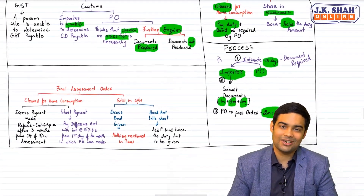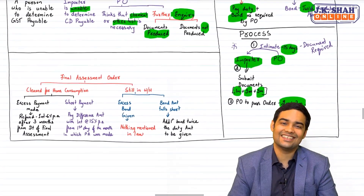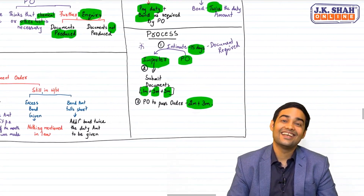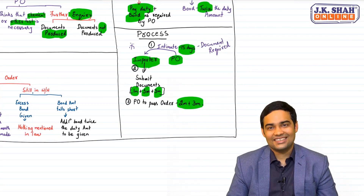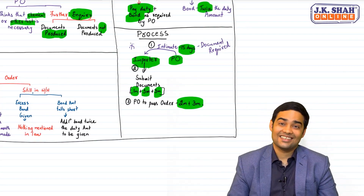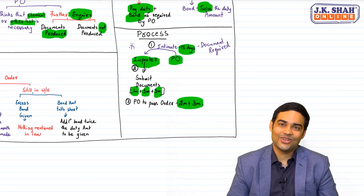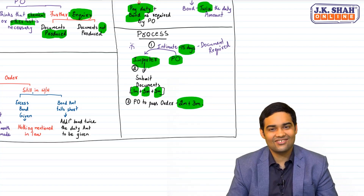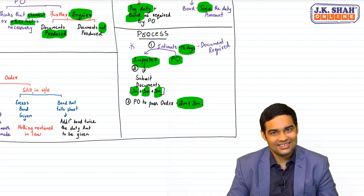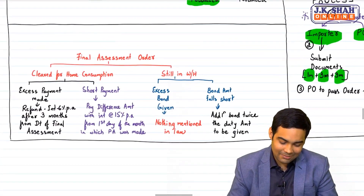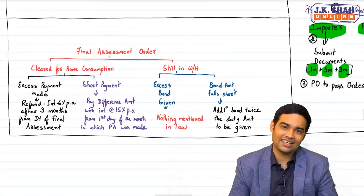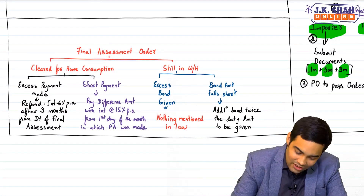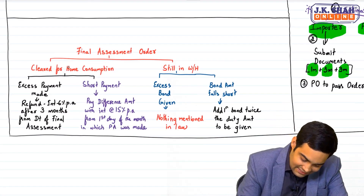For comparison, under GST the time limit is 6 months plus 6 months plus 6 months plus another extension, totalling up to 5 years. Moving to the last segment - final assessment order: if I have already cleared the goods for home consumption and made an excess payment, I am eligible for a refund with interest at 6 percent per annum after three months from the date of final assessment.